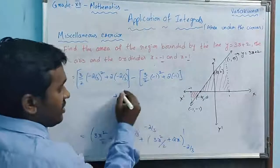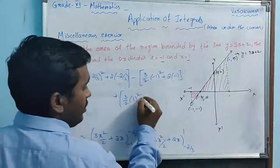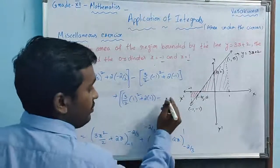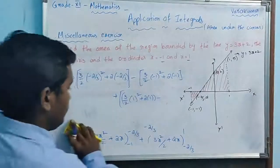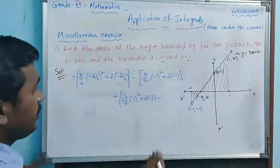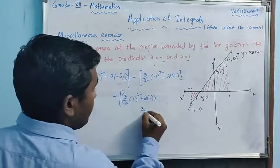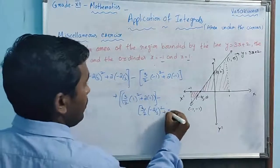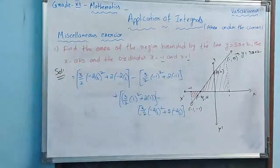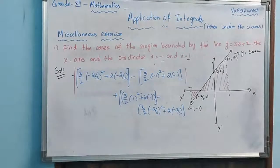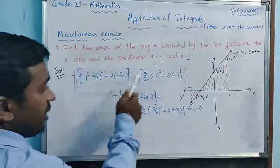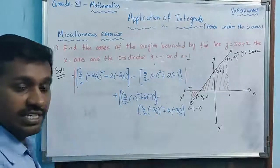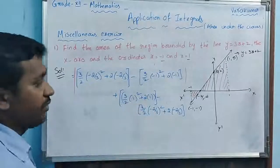Then subtract the lower limit: 3/2 × (-1)² + 2 × (-1). For the second integral, substitute upper limit x = 1: 3/2 × 1² + 2 × 1, then subtract x = -2/3: 3/2 × (-2/3)² + 2 × (-2/3). Don't forget the modulus — if you do not apply it, you will get the answer as 0.